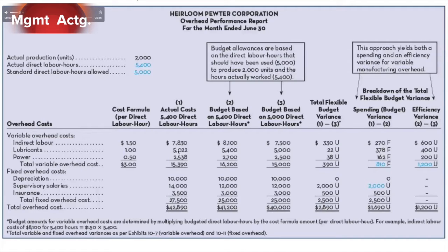Here are our variable costs broken down per cost component — indirect labor, lubricants, and power — for total variable overhead costs. Below we have our fixed overhead costs: depreciation, supervisory salaries, and insurance, for a total overhead cost of $42,890. We're going to take this one column at a time.